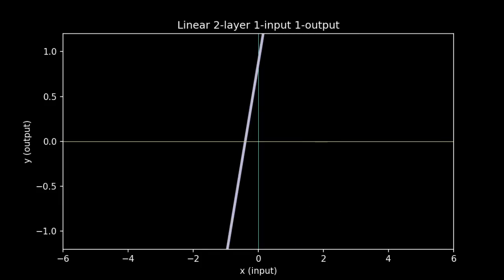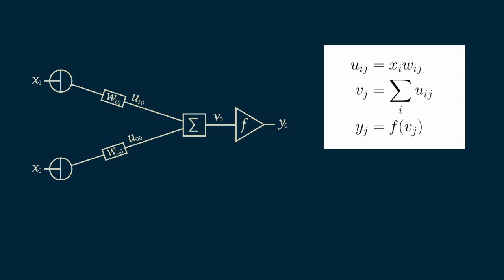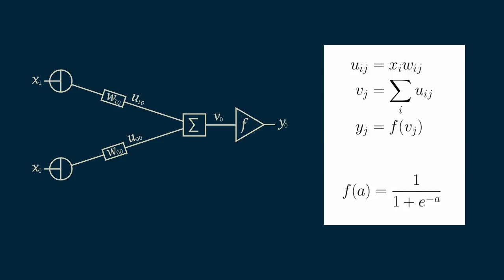In order to get more flexible models, we're going to need to add some non-linearity. We'll modify our linear equation here. After we calculate our output, V sub 0, we subject it to another function, F, which is not linear. We'll call the result Y sub 0.